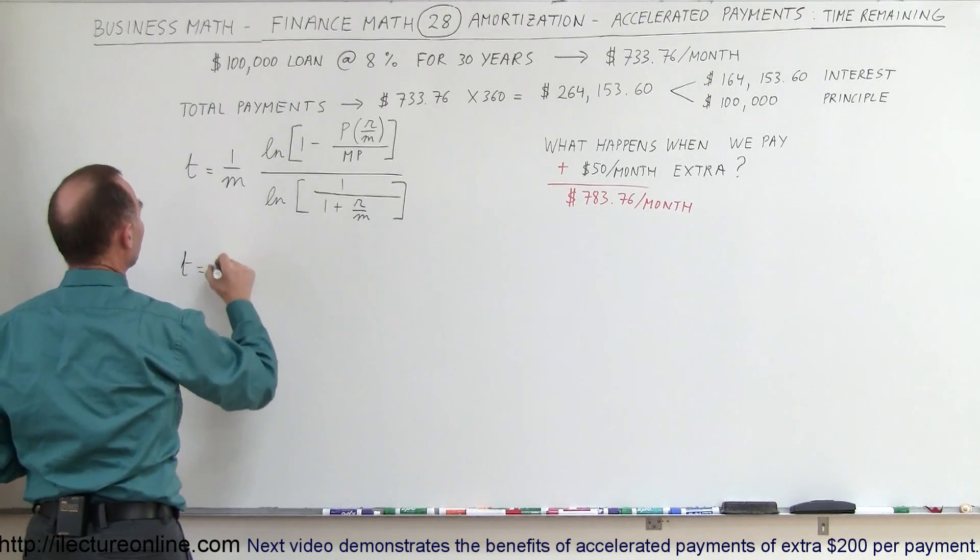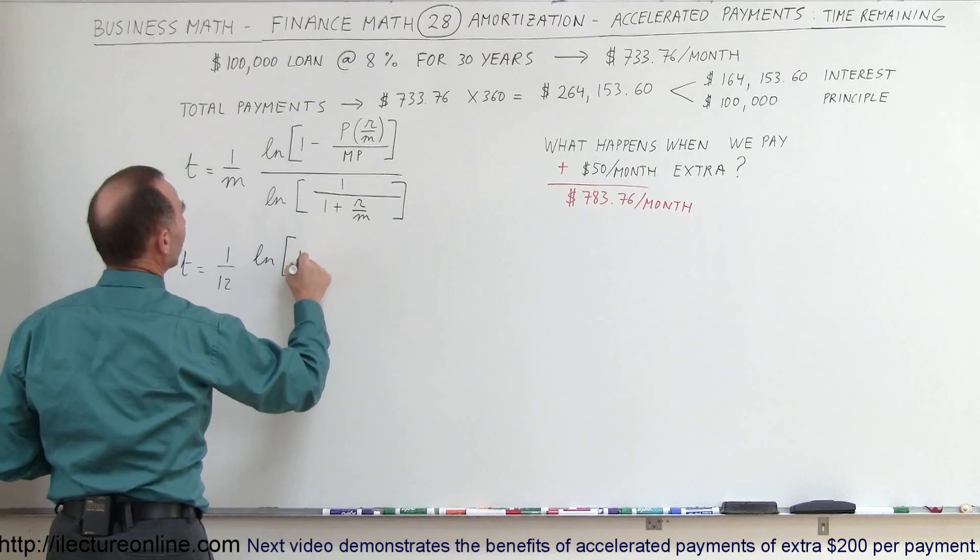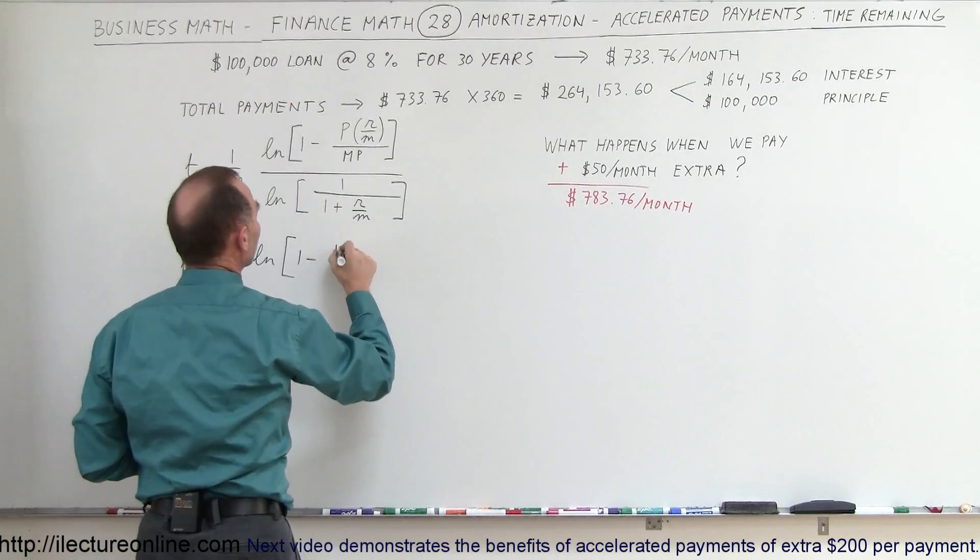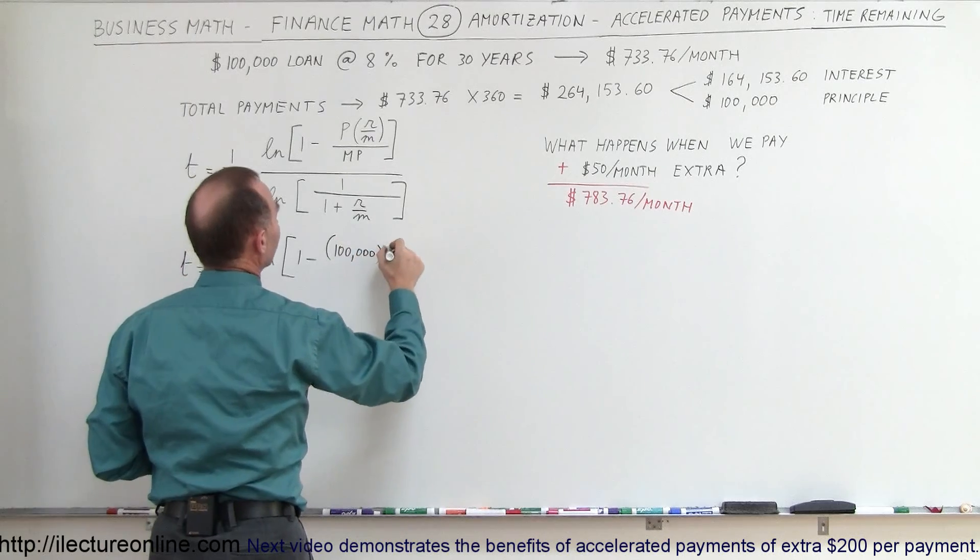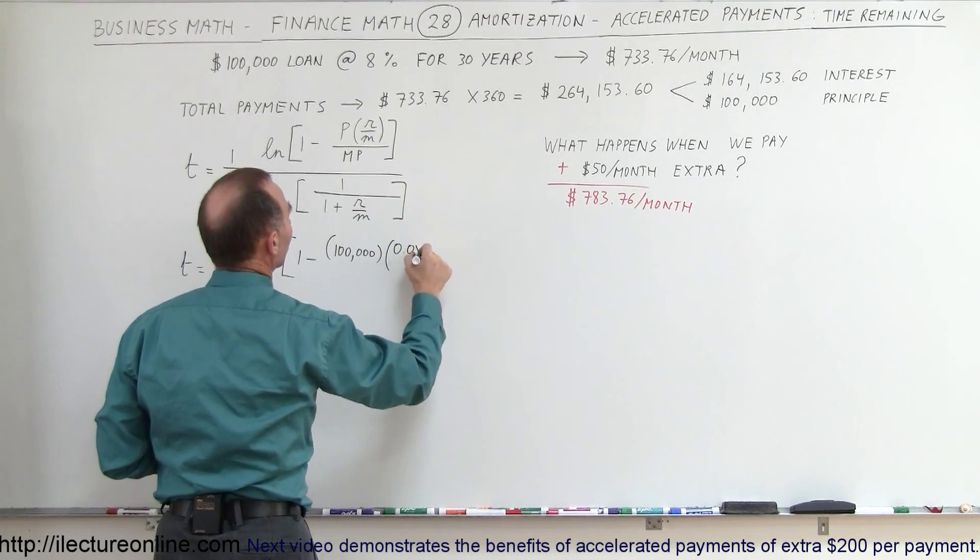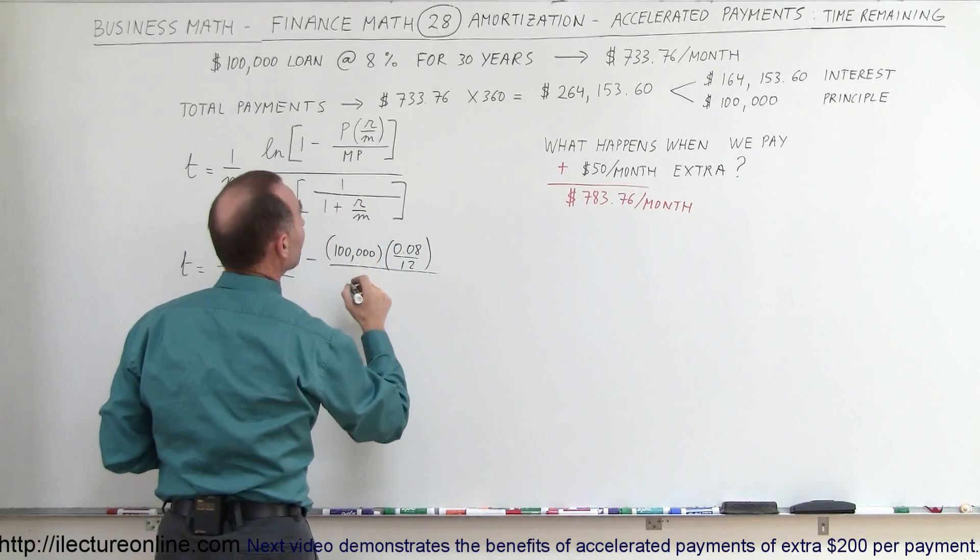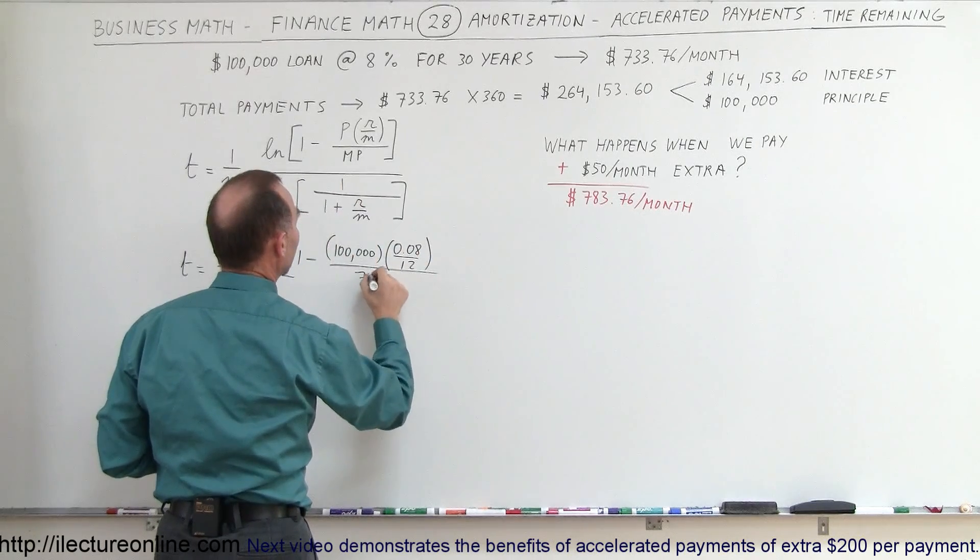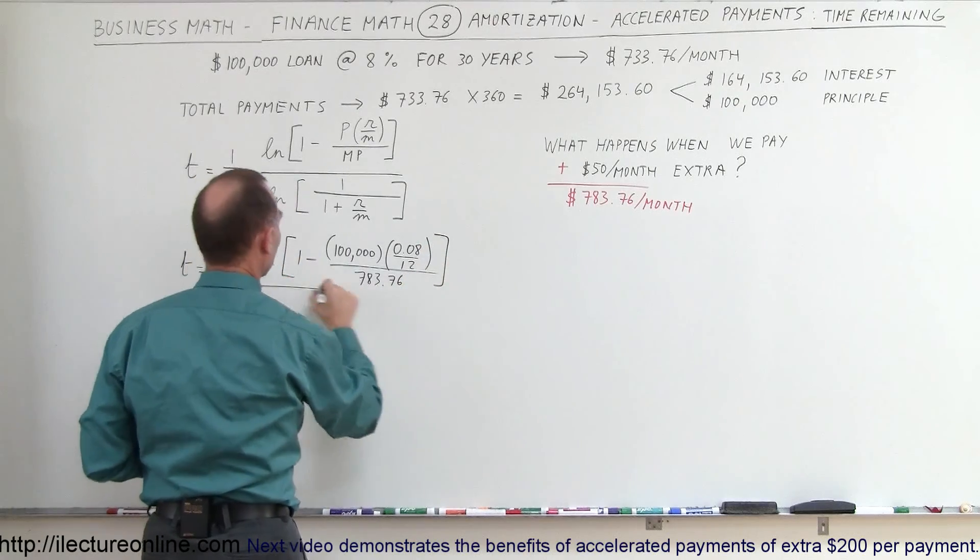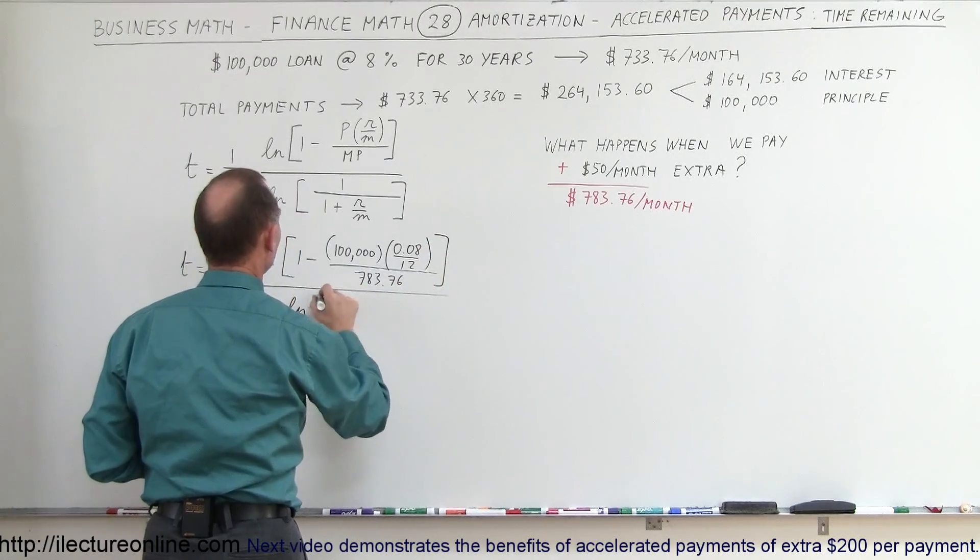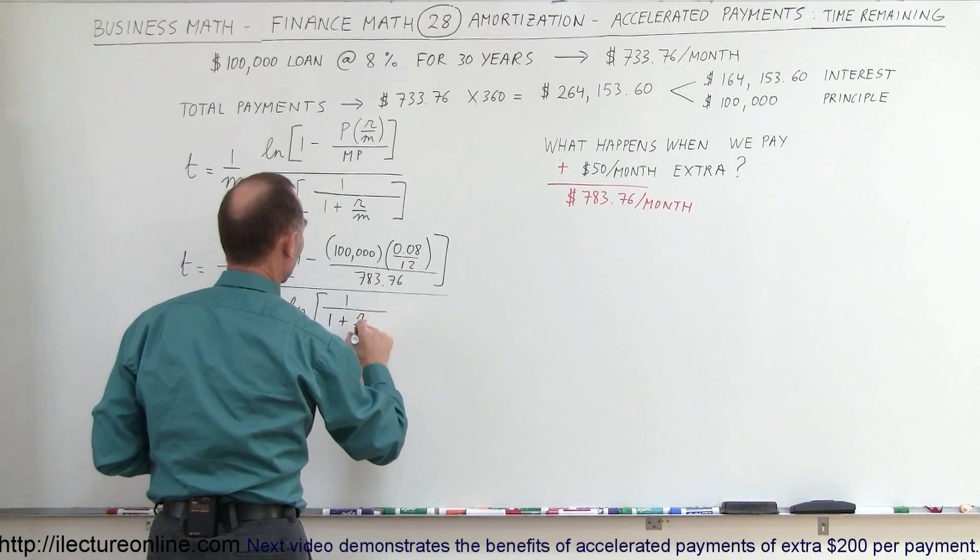So the time remaining in years is equal to 1 divided by 12 times the natural log of 1 minus the principal balance, which is $100,000, multiplied times the rate, 0.08 divided by 12, and the whole thing here divided by the monthly payment, which will now be $783.76, and we divide the whole thing by the natural log of 1 divided by 1 plus r over m.